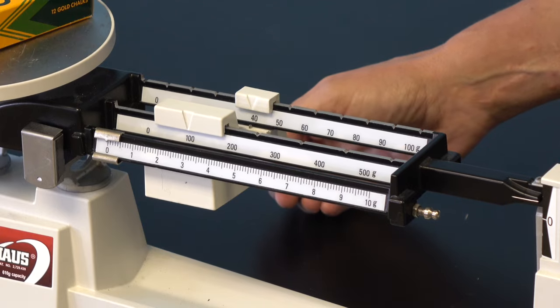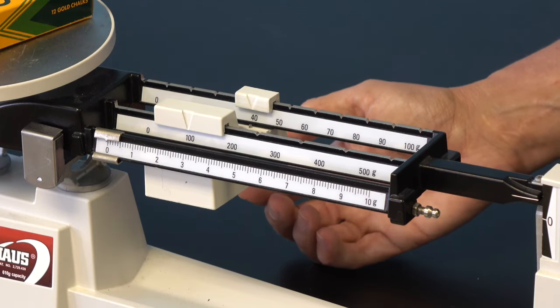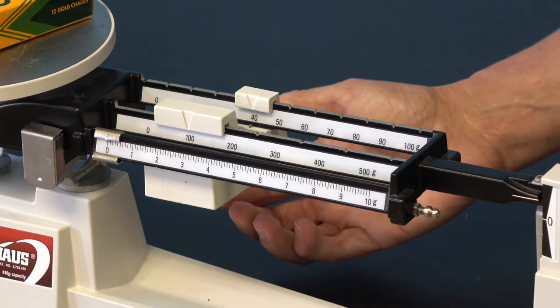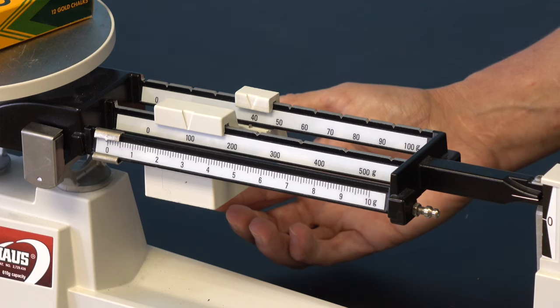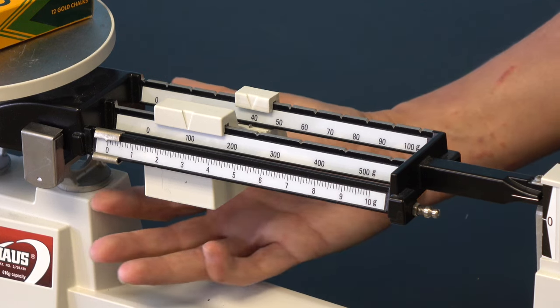Third, the front rider is moved. There are no notches on the front beam. This rider is gently moved until the pointer exactly matches up with the zero mark.